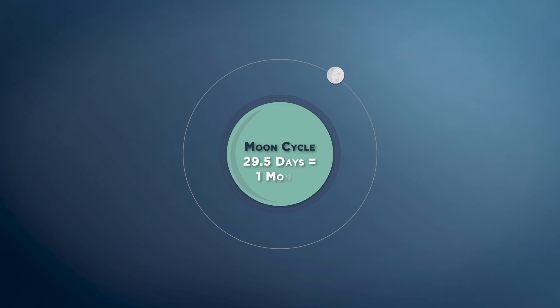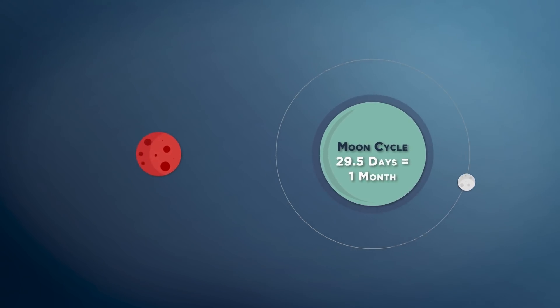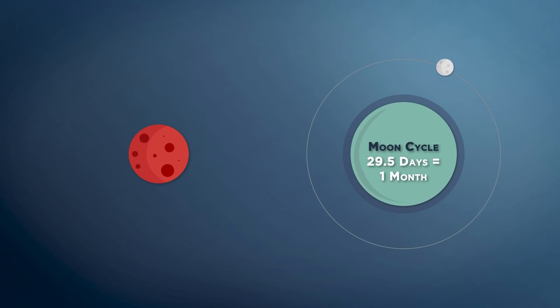Now, the next unit of time to define after the day would be the month. On Earth, we use the moon to define this length of time, as it takes 29 and a half days to complete the lunar cycle, which conveniently breaks the year down into roughly 12 equal parts. However, on Mars, it's not quite that easy.